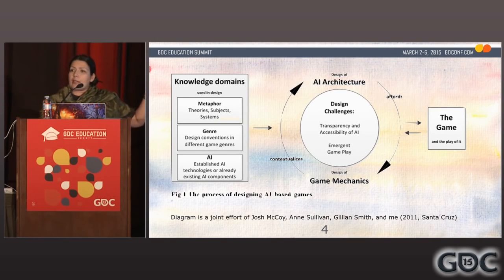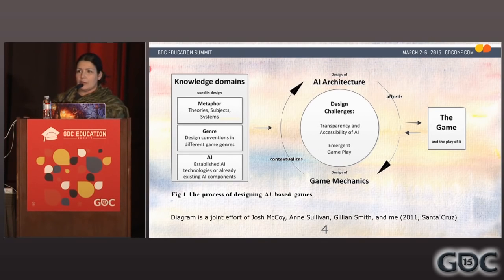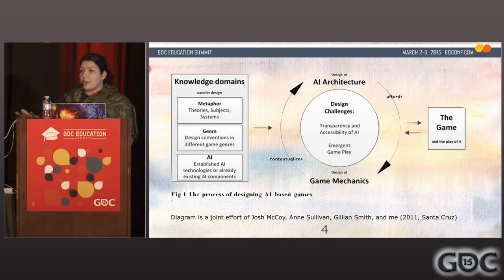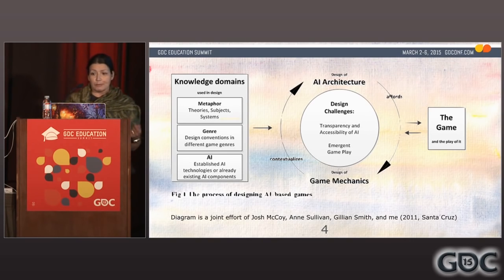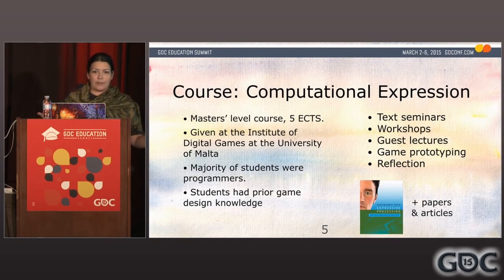We also saw that back then the main challenges we were facing in our own practice were how to make the AI really be foregrounded — how do you make it transparent to the player that something interesting is happening, so you don't have a super tailspin-like system where you don't see what's on the surface. Another challenge was looking at particular sweet spots for emergence, like when a game is fun and understandable but still rich and something you can explore. So we reasoned a lot about that, and when I designed the course Computational Expression, I tried to find a way to give this to the students.